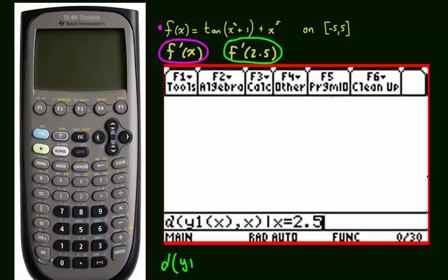of the function y1 of x, with respect to x. Then I have this slash. That slash means such that. And that can be found under the equals, right here, next to the 7, under the equal. So that slash means such that,